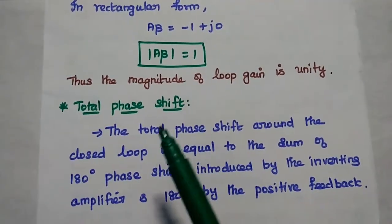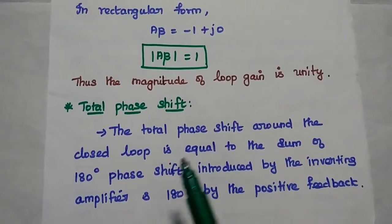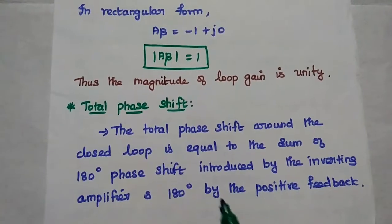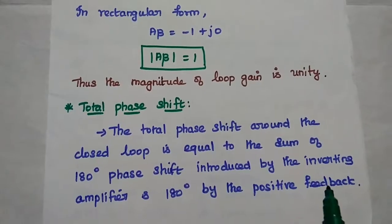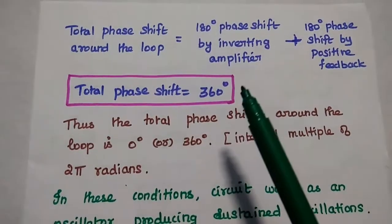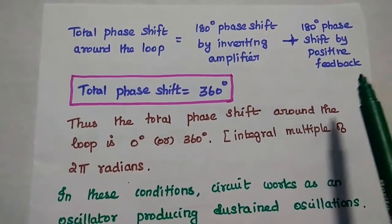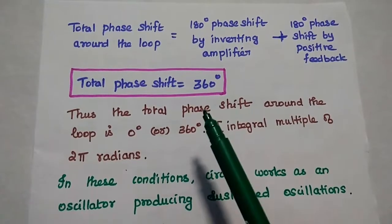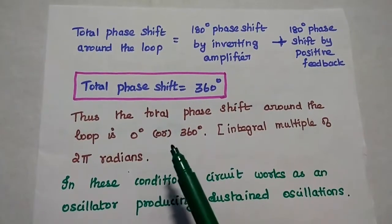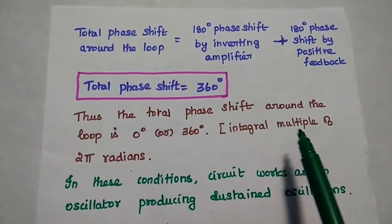Next, we have to prove the total phase shift required for oscillation. The total phase shift around the closed loop equals the sum of the phase shift introduced by the inverting amplifier and the phase shift produced by the positive feedback. That is 180 degrees plus 180 degrees, giving a total phase shift of 360 degrees. The total phase shift around the loop is either 0 degrees or 360 degrees, which can also be expressed as an integral multiple of 2π radians.